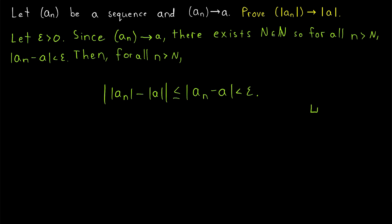And so, we are done. And that completes the proof. So, if a sequence converges to a number, then the absolute value of that sequence converges to the absolute value of that number.